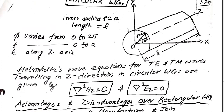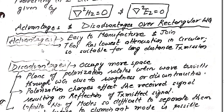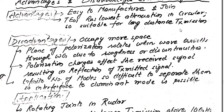Now let us look at the advantages and disadvantages of a circular waveguide over a rectangular waveguide. Advantages: first, they are easy to manufacture and join as compared to rectangular waveguides; second, the TE₀₁ mode has the lowest attenuation in a circular waveguide, making it suitable for long-distance transmission.